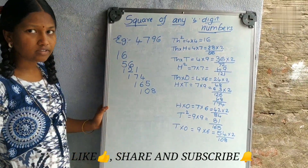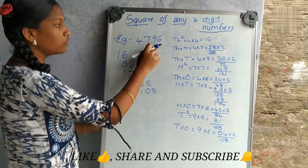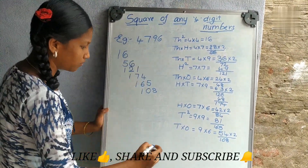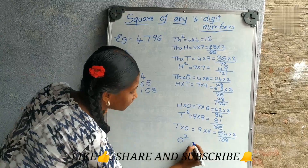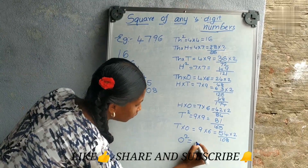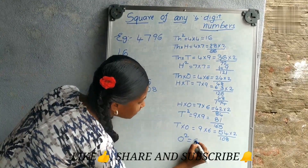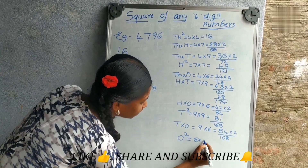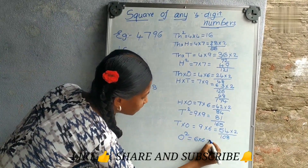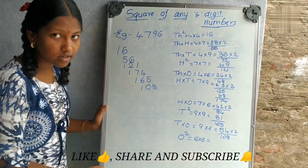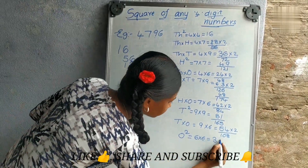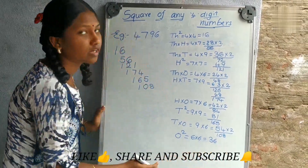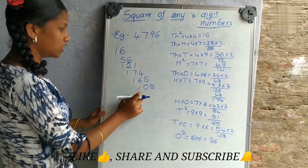Now we have to write the square of the ones digit. That is 6 squared — 6 into 6 — 6 sixes are 36. Write this number here.